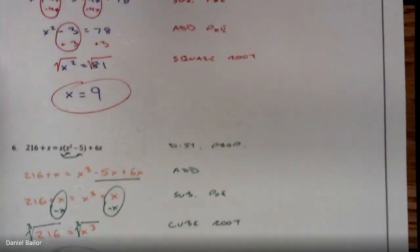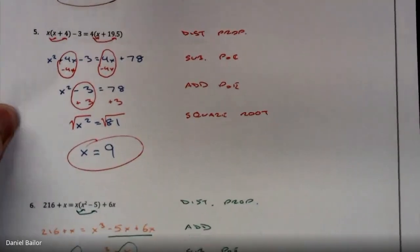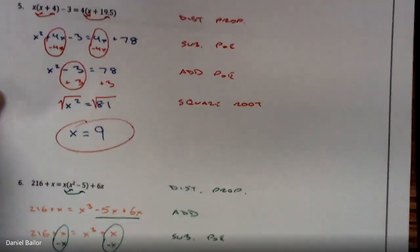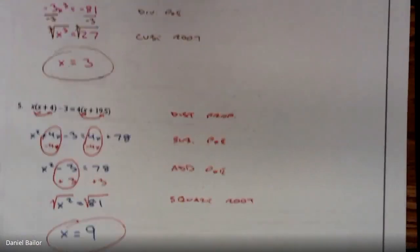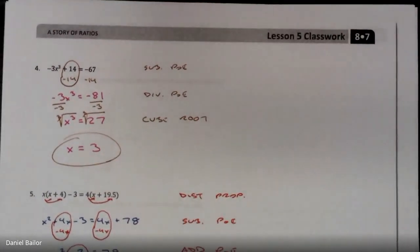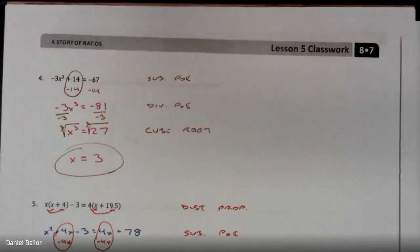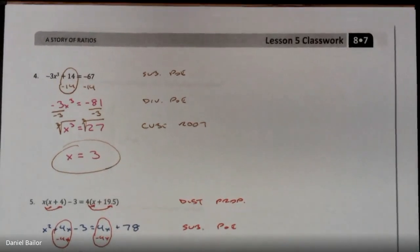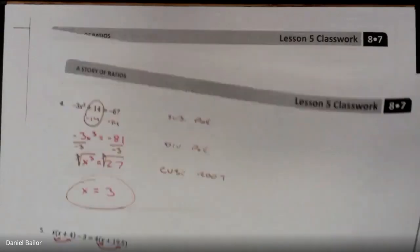So you should have gotten 3 for number 4, 9 for number 5, and 6 for number 6. If you got all those, you know exactly what you're doing and you're doing well. If you did not, go back, look at them again, try them again, or ask me for help.